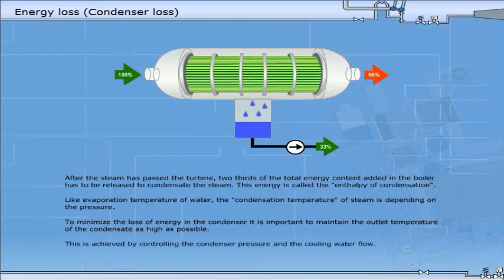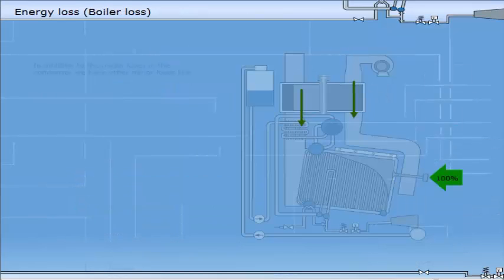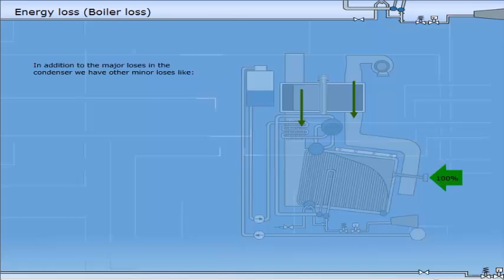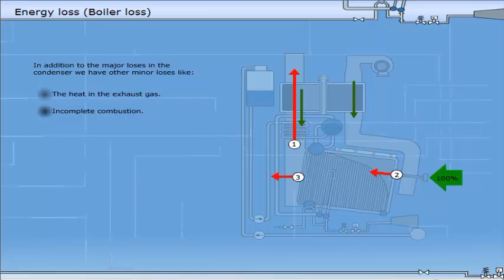This is achieved by controlling the condenser pressure and the cooling water flow. In addition to the major losses in the condenser, we have other minor losses like the heat in the exhaust gas, incomplete combustion, and radiation losses from the boiler.